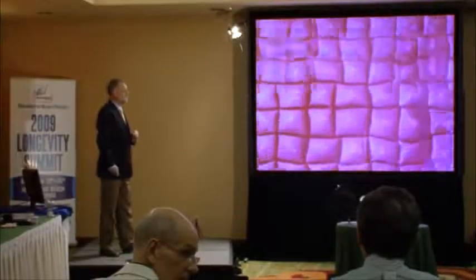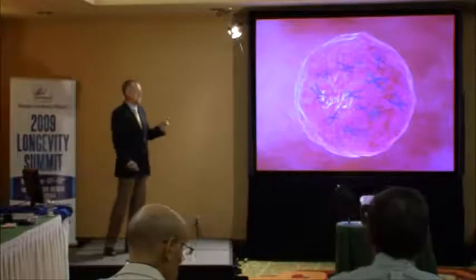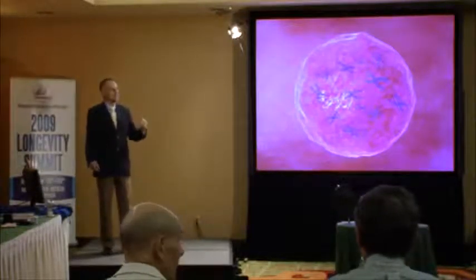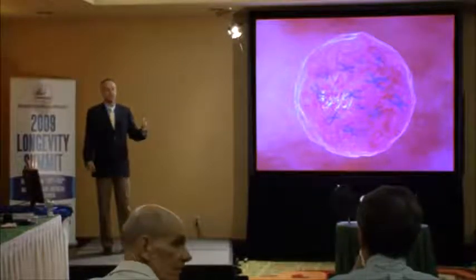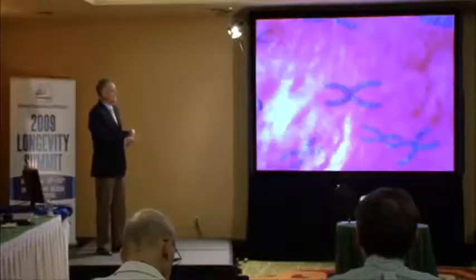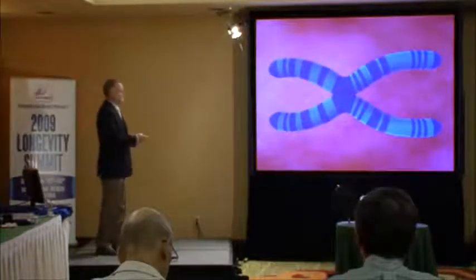If we zoom in any further, we see that every cell contains a nucleus. Inside that nucleus are the chromosomes, and those are where all the genes are that give us our blonde hair, blue eyes, make some of us short, make some of us smart. And if we zoom in further, I want to focus specifically on a chromosome. A chromosome is made up of two arms — at least a metaphase chromosome is made up of two arms.